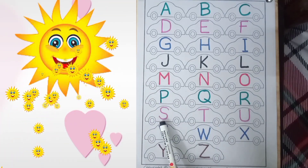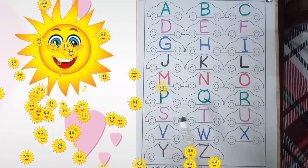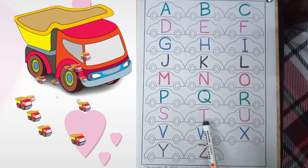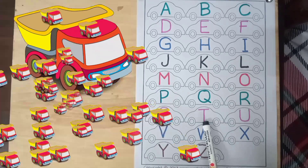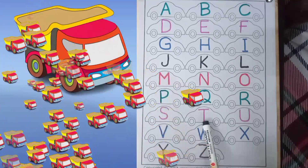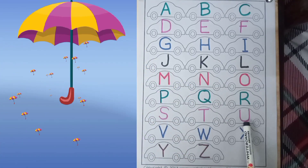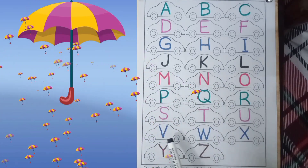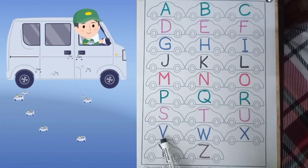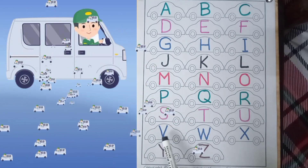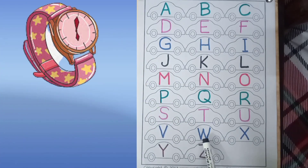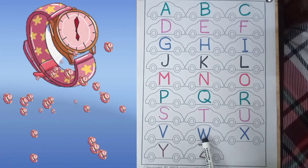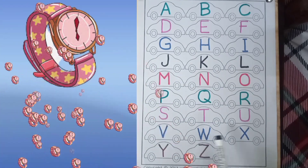S for sun, T for toy, U for umbrella, V for van, W for watch.